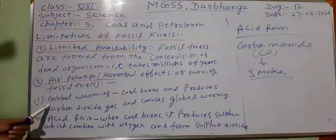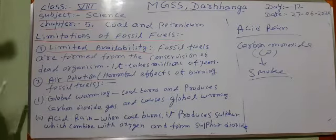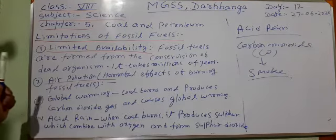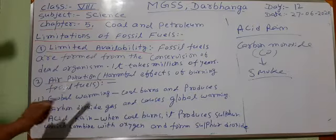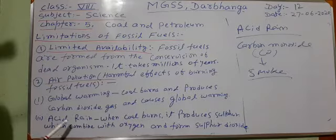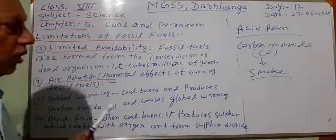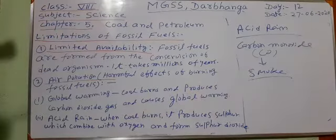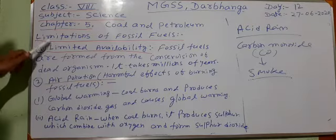These are the harmful effects of burning coal and burning fossil fuel. Fossil fuel has two limitations. One is limited availability, which can be overcome by conservation. The second is air pollution, which includes: release of carbon dioxide causing global warming; release of sulfur causing acid rain; release of carbon monoxide causing suffocation and possibly death; and release of smoke causing respiratory problems. Revise it and write everything in detail. Thanks.